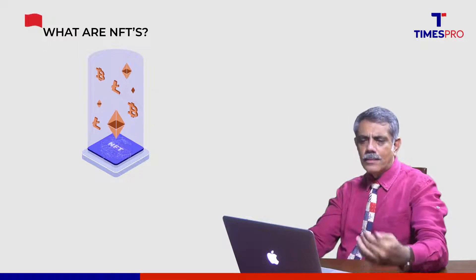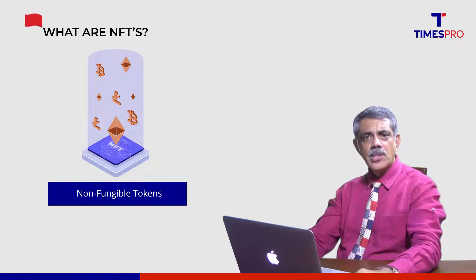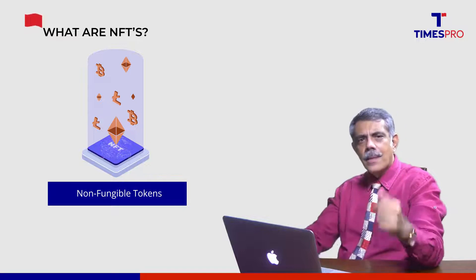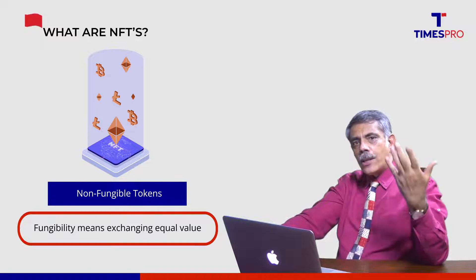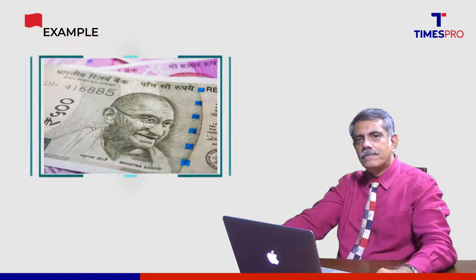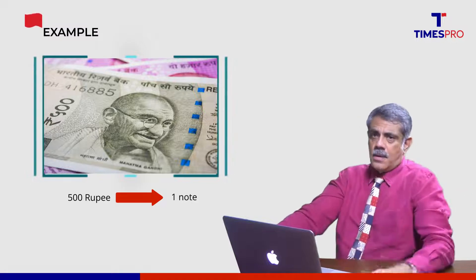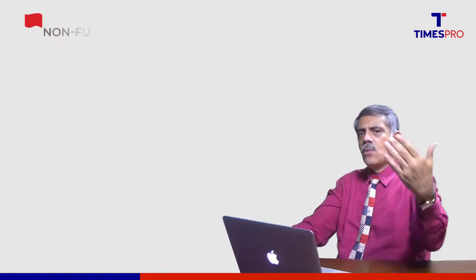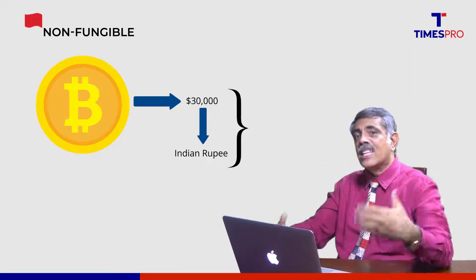NFTs — you may ask, what are NFTs? Simply put, they are non-fungible tokens. What does fungible mean? The 'non' part is clear, the 'tokens' part is clear — but what's fungible? Fungibility means exchanging equal value. For example, if I lend you 500 rupees, you can give it back as one 500-rupee note or ten 50-rupee notes — anything equivalent in value. If I buy a Bitcoin for $30,000, that equal exchange is fungibility.